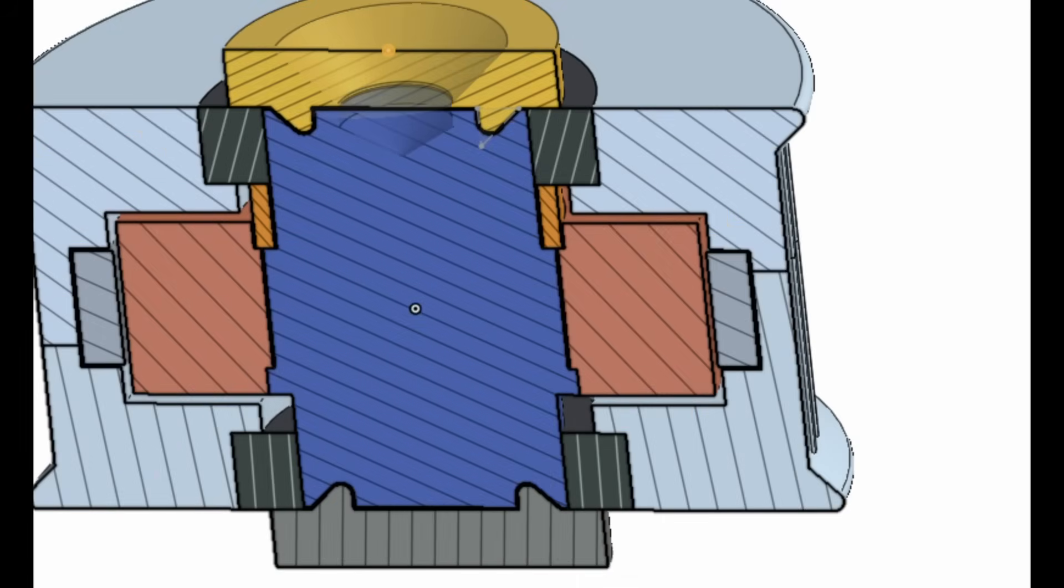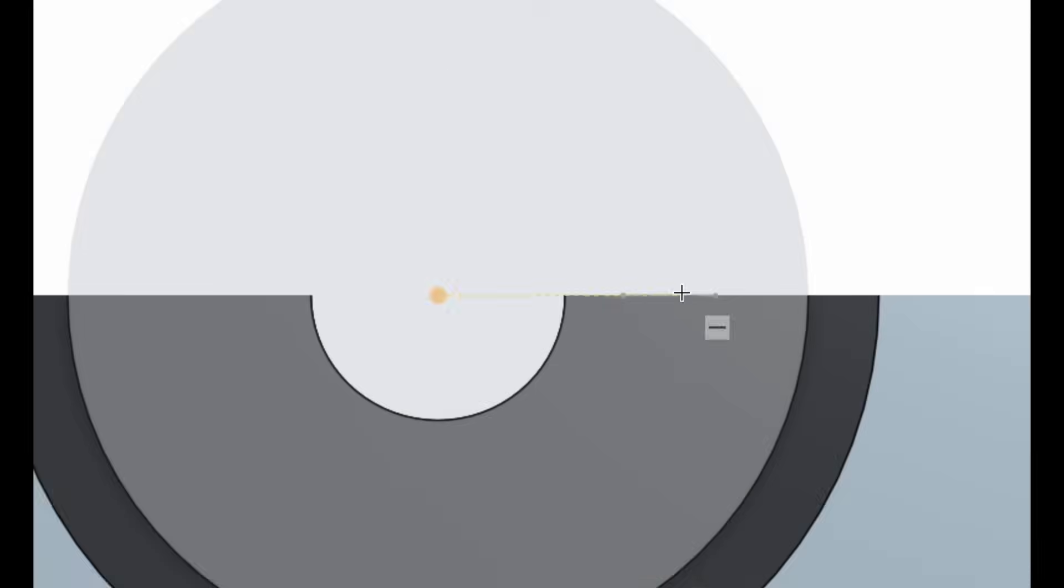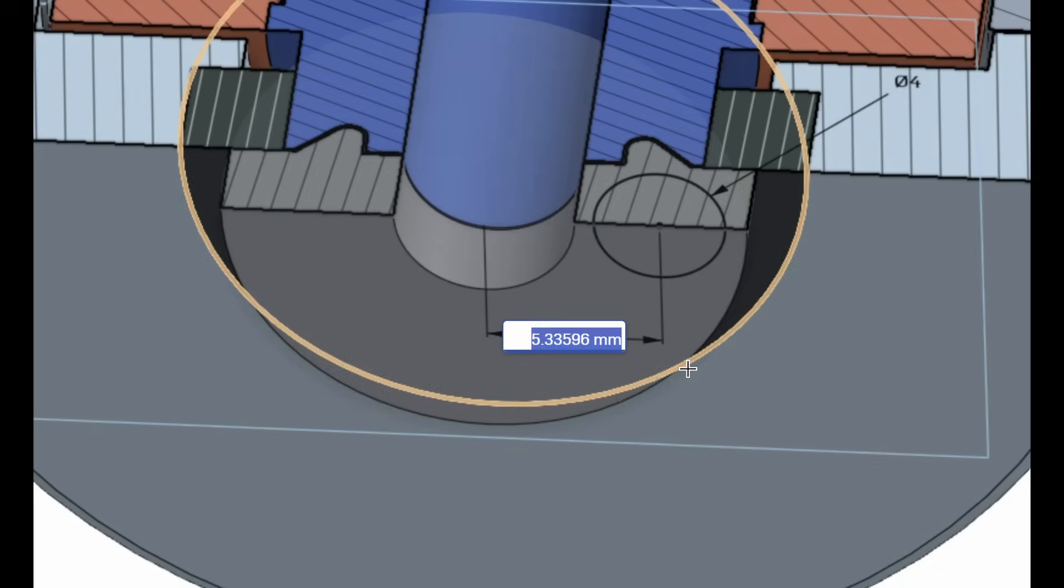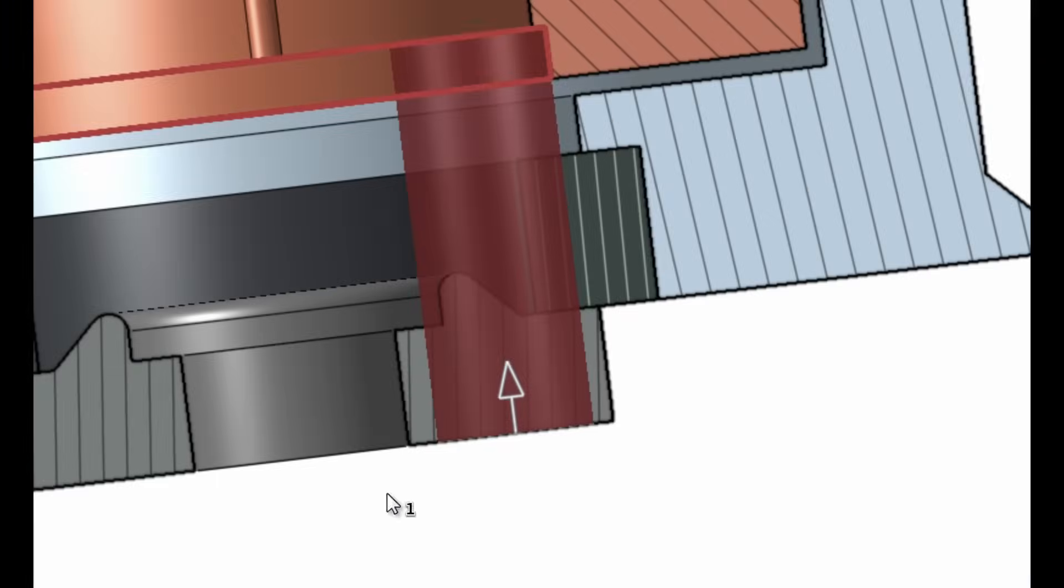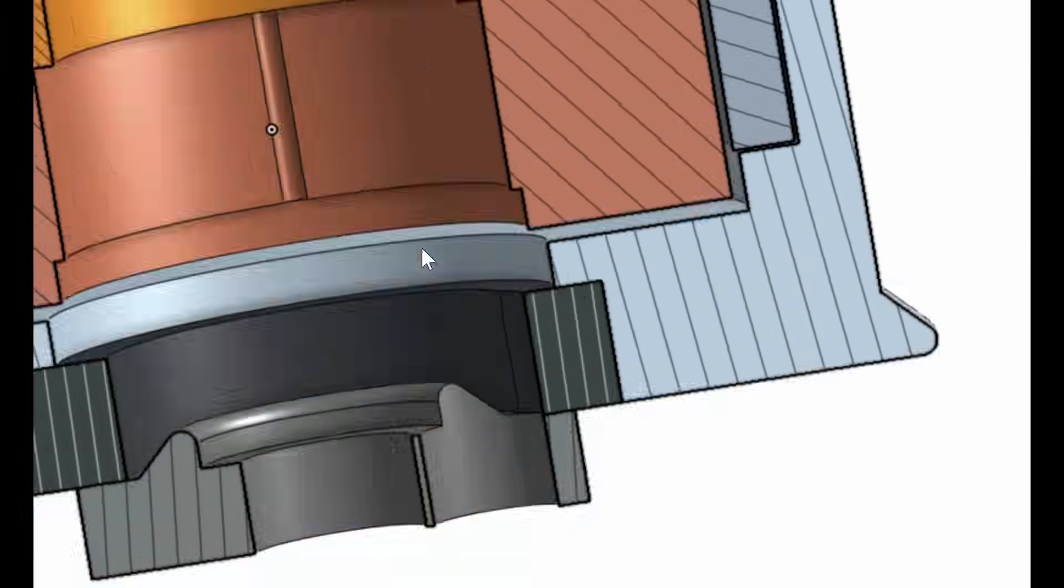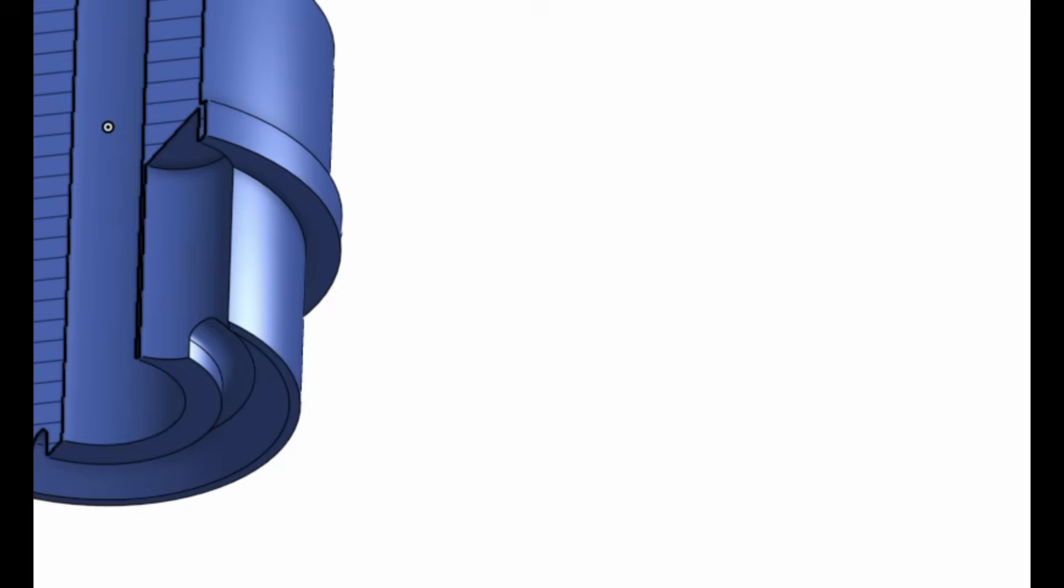Next up is the mounting hole. A countersunk through hole should be all we need. Last, we need a way for the motor wires to escape. I'm using fairly small bearings, which probably makes this the trickiest part of the design.